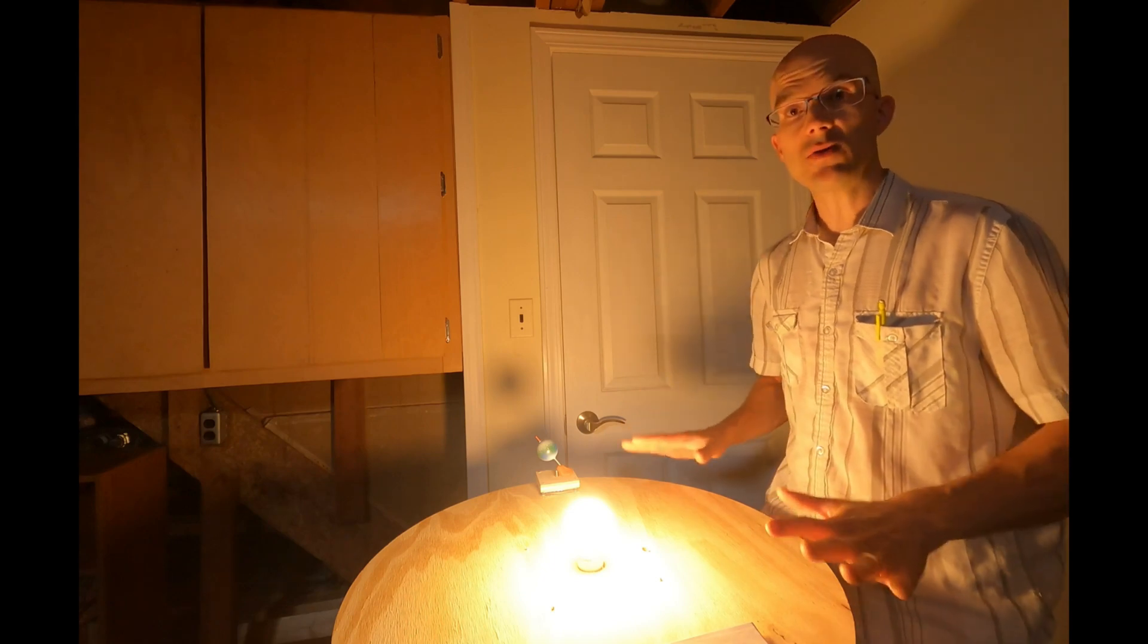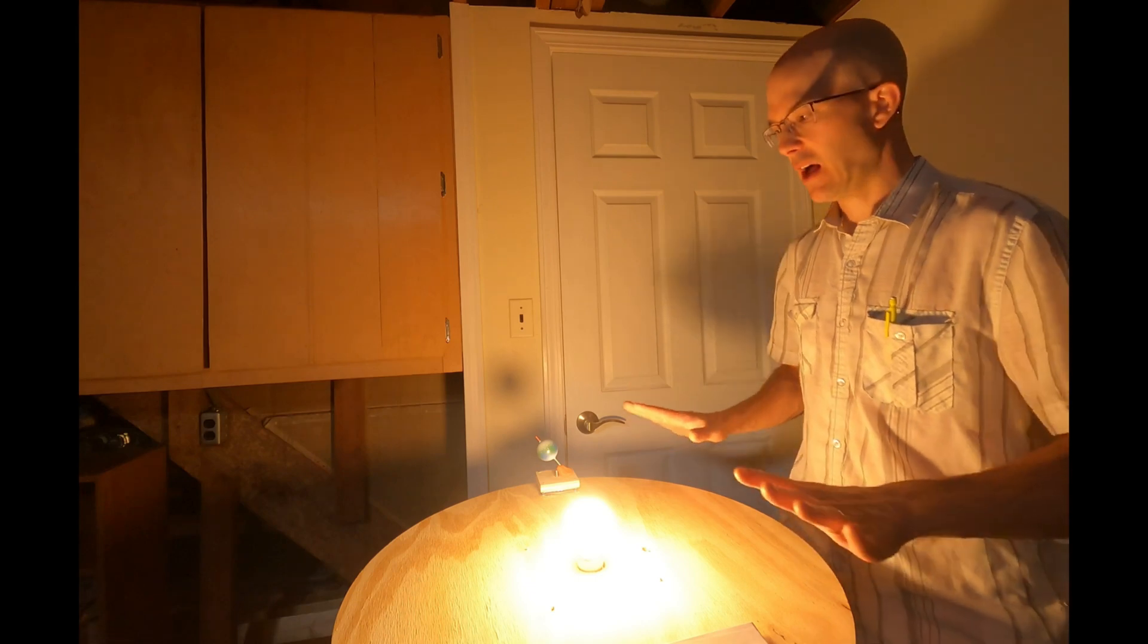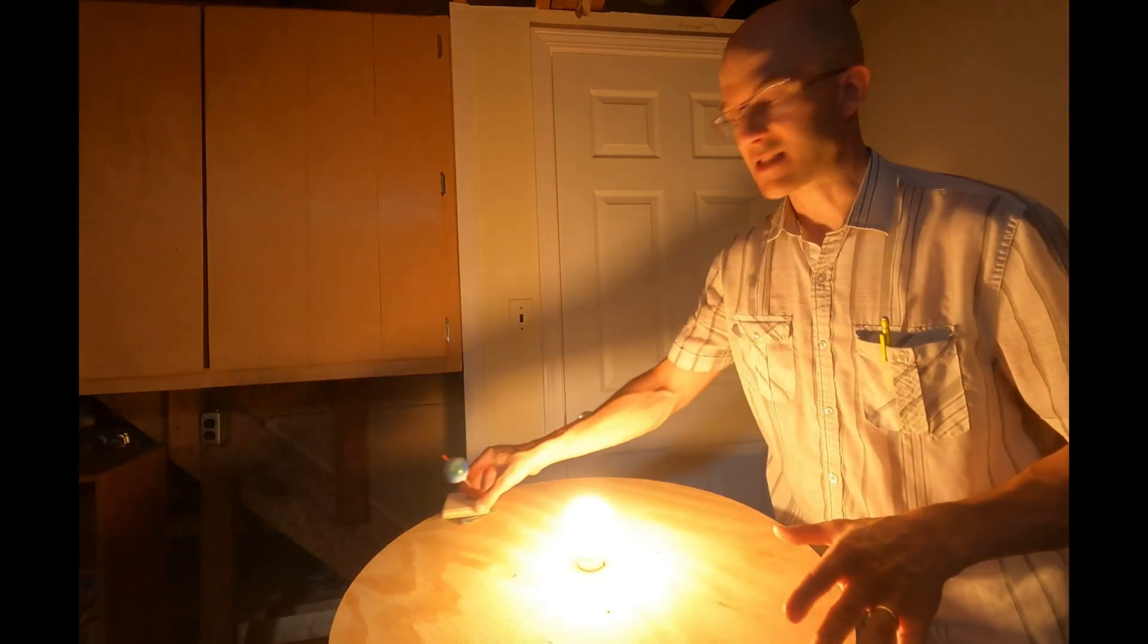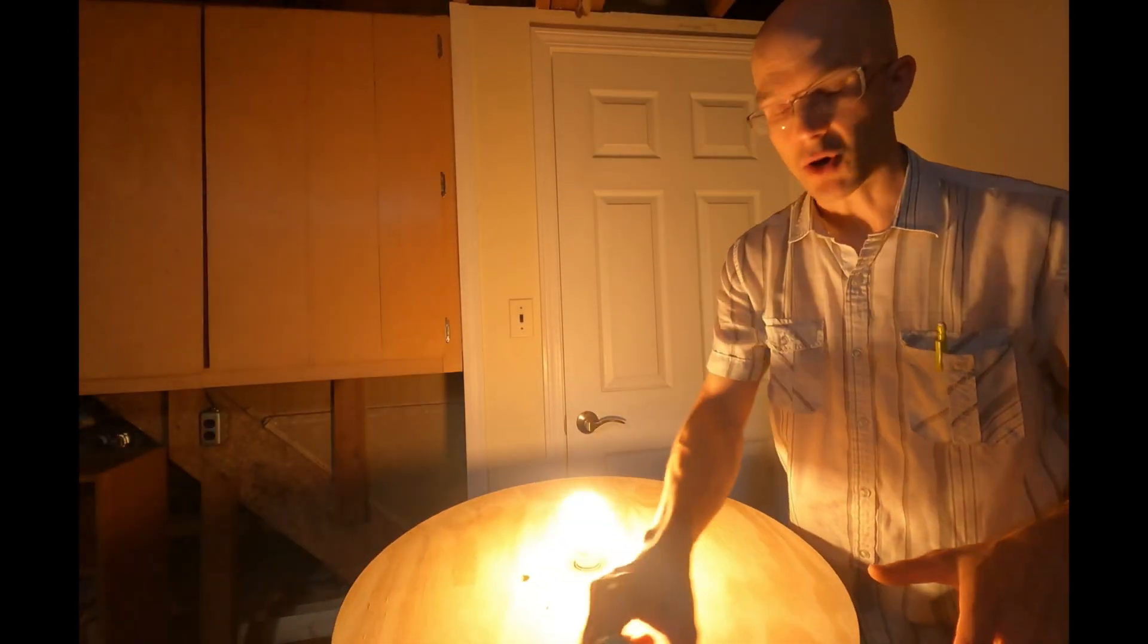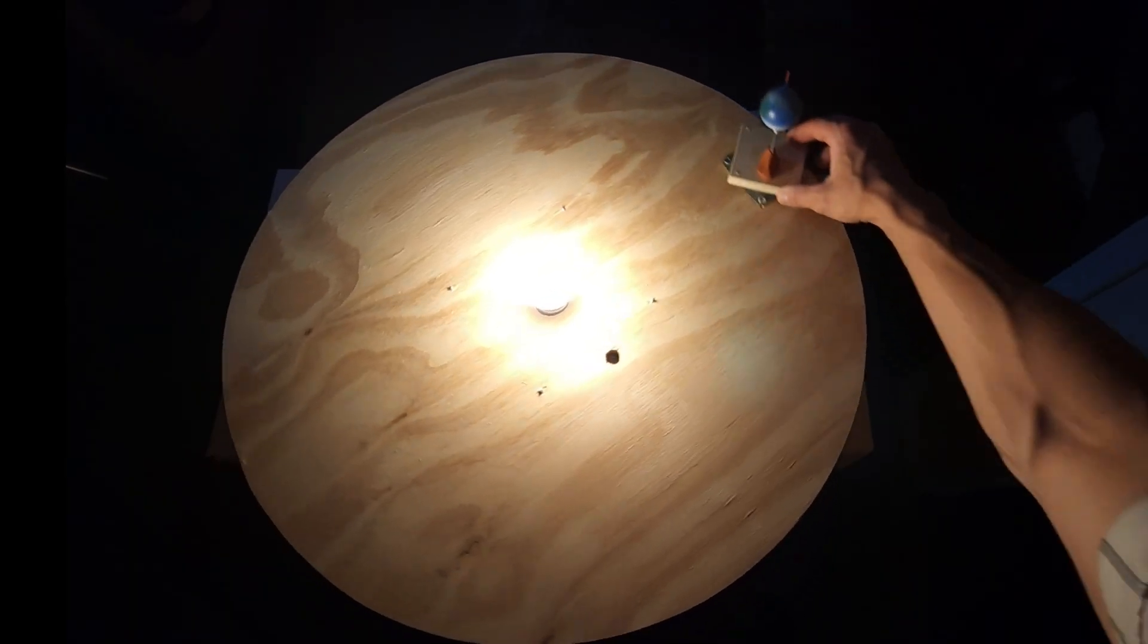To demonstrate how we can use parallax to compare the distances to stars that we see in the night sky, I've set up this really simple little apparatus. What I've built here is a simple rotating stage that models the Earth's revolution around the sun. As Earth revolves around the sun, its position is changing.